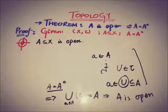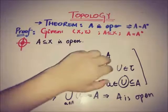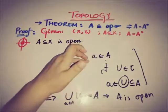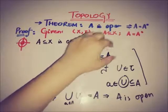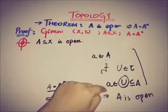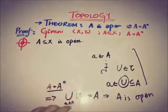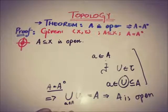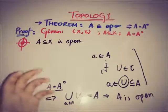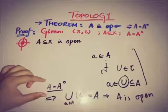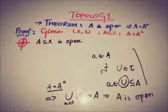More precisely, since A equals the interior of A, by the definition of interior as the union of all open neighborhoods, A equals the union of all open neighborhoods of its points. The arbitrary union of open sets is also open, which means A is open. This completes the converse proof.